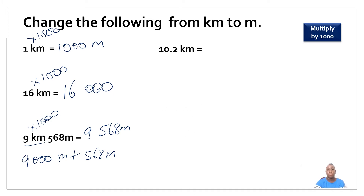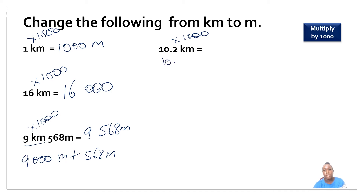I have ten point two kilometers and I would like to convert it to meters, so I multiply by one thousand. When I am multiplying decimals, I shift my decimal point to the right. I am multiplying by a thousand so I have to shift my decimal point to the right three times. So I get ten point two → one, add a zero, move the second time, add a zero, move the third time — giving me ten thousand two hundred meters.